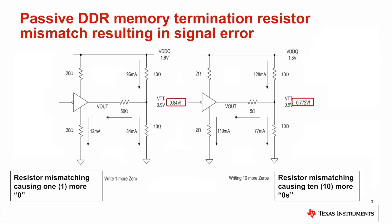If left uncorrected, reflections may cause the signal's voltage to move past the defined zero or one voltage levels, which can cause the receiver to incorrectly interpret the received signal. This will in turn cause the receiver to generate an erroneous result. Resistor mismatching — having a resistor larger or smaller than your target impedance — can exacerbate receiver errors during data write, read, and high-low transitions.